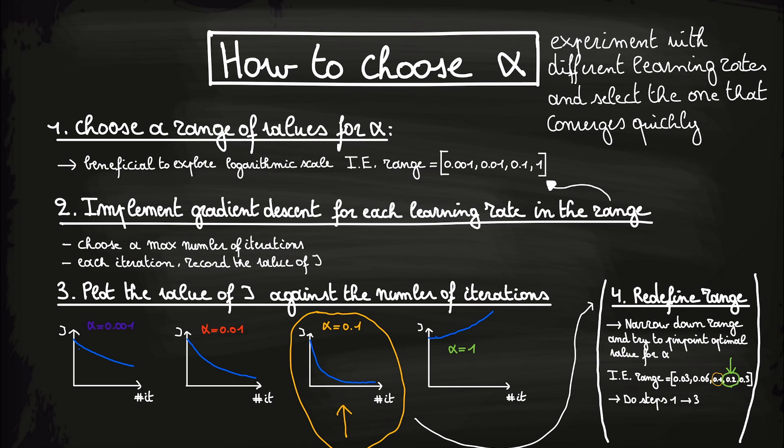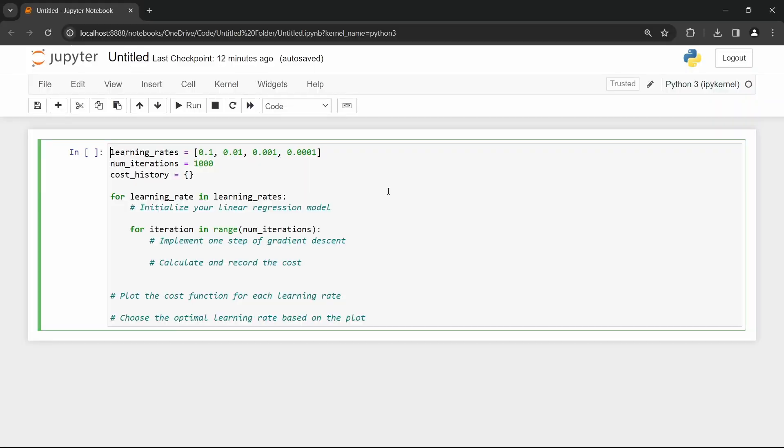Now that we have a process to find a good value for the learning rate, let us look to some Python-like pseudocode to make things more clear. We start by defining a range of values that we want to try as our learning rate and we set a max number of iterations.